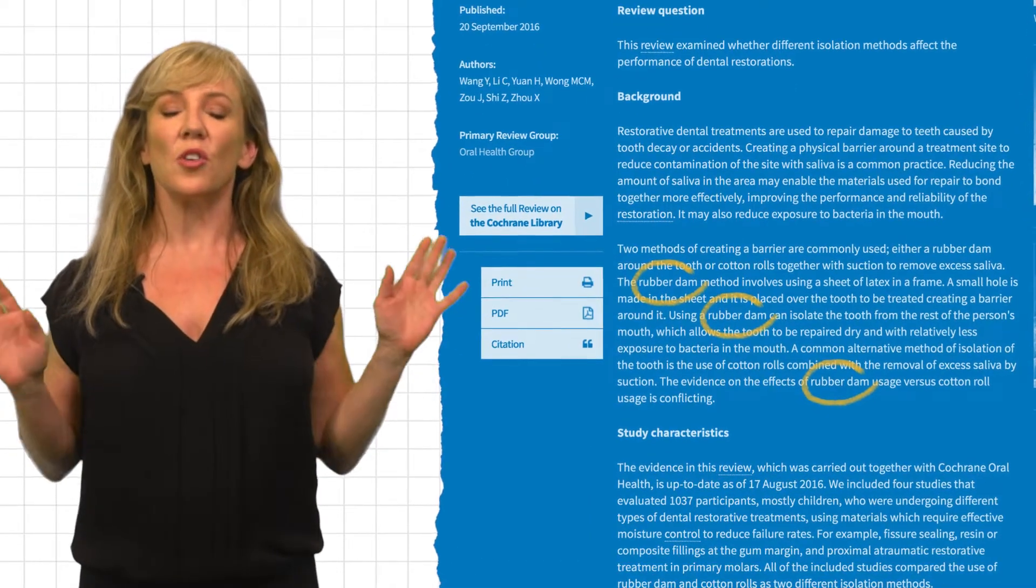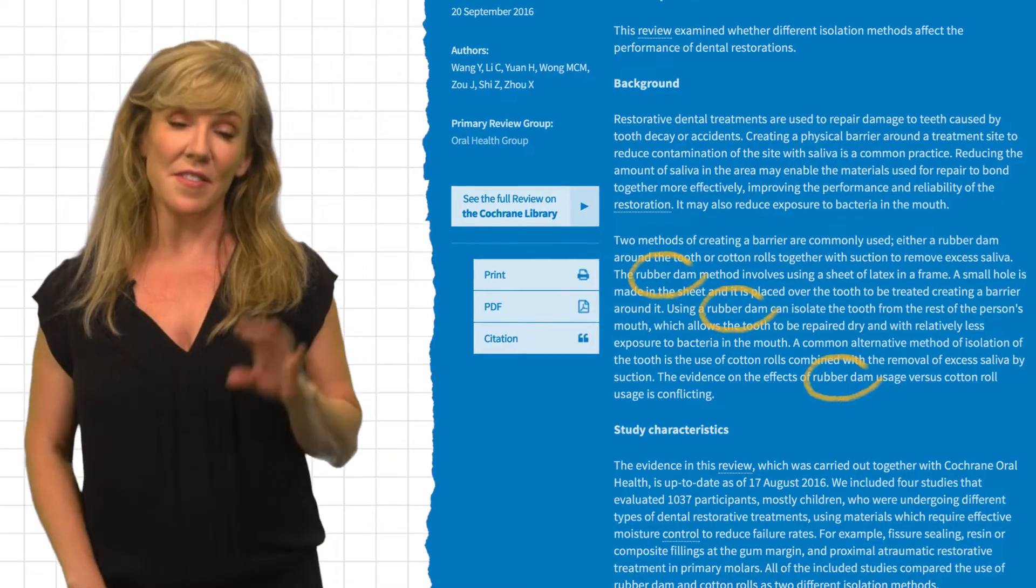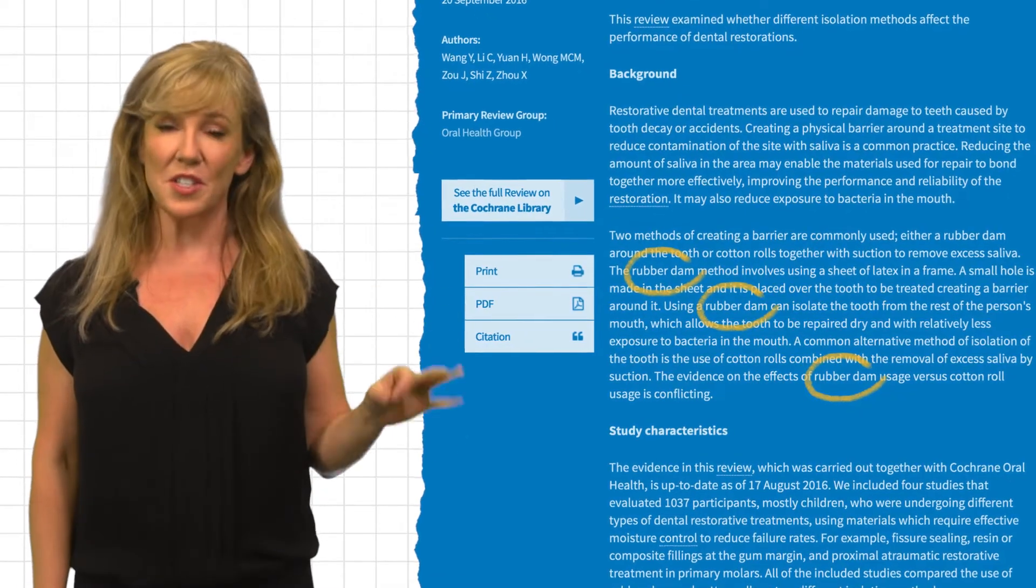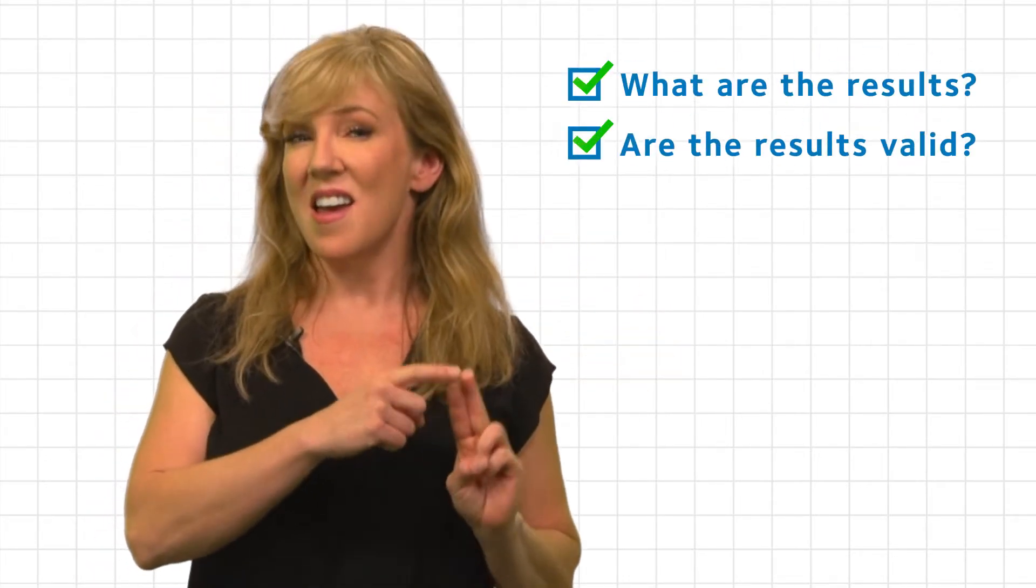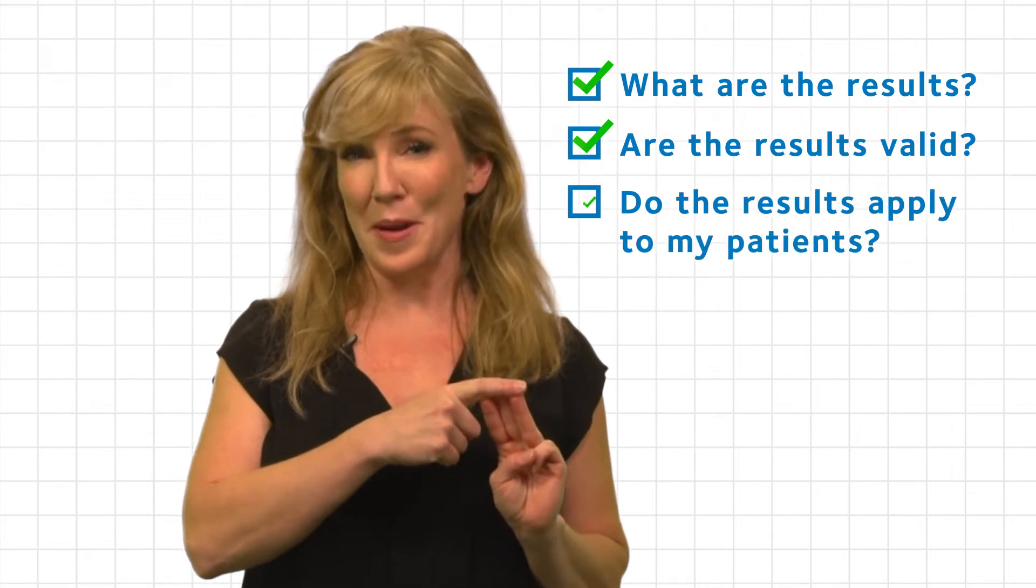Cochrane reviews are considered to be the gold standard of systematic reviews. Nonetheless, it is actually very important to continue evaluating a systematic review for quality. At this point, I can either critically appraise the systematic review myself by answering these three questions. What are the results? Are the results valid? And will the results help me in caring for my patients?